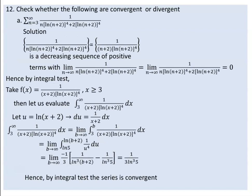Check whether the following series is convergent or divergent. The series involves 9 plus 2 to the power of 4. The first term is 9 plus 2 to the power of 4. Just take the next one out. A sequence is a sequence, and a series is a series. The series is positive.